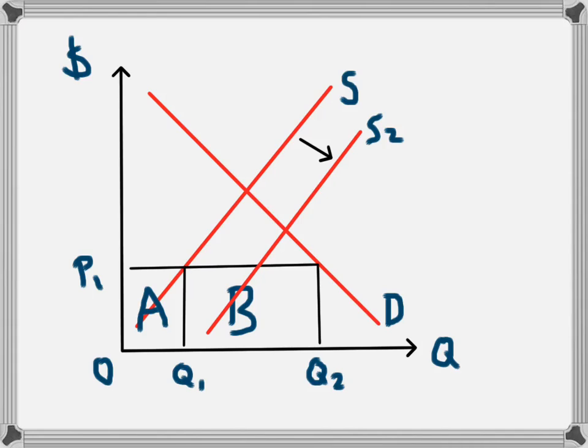Now at that price level, the domestic businesses are willing to produce more products, and we'll put this new level Q3. So previously, the domestic production was from zero to Q1. Domestic production is now from zero to Q3.